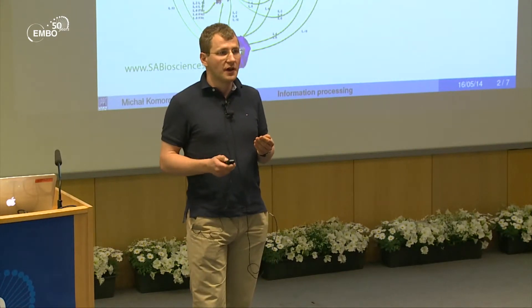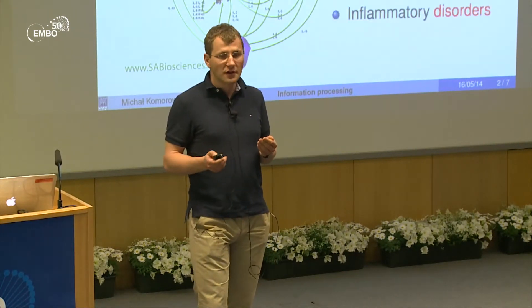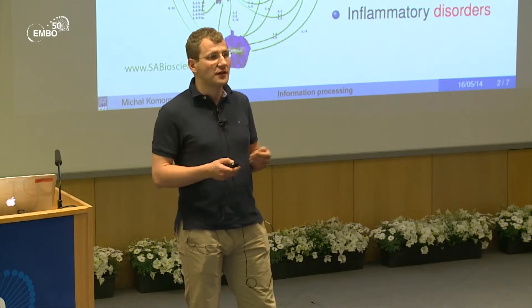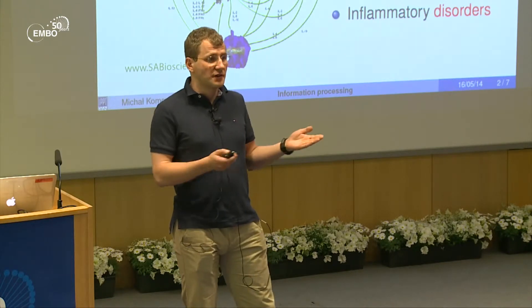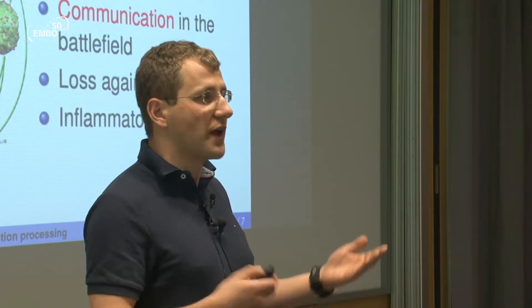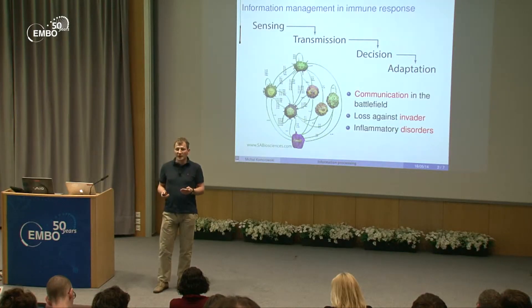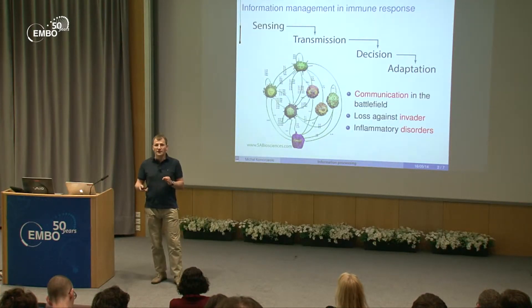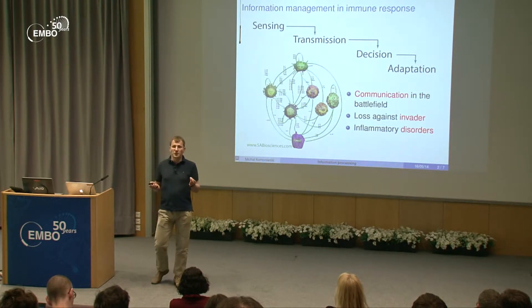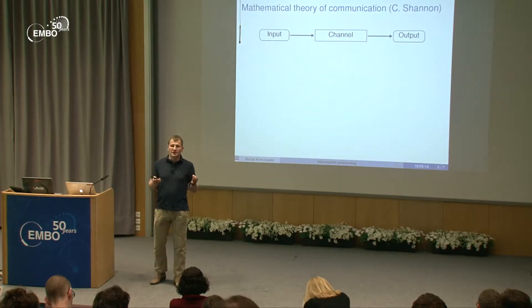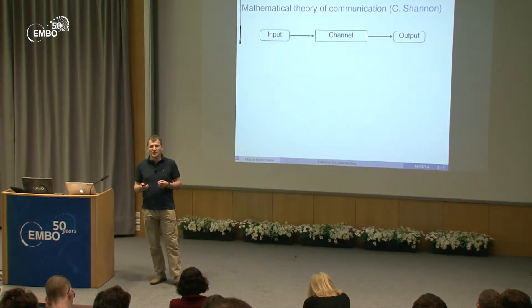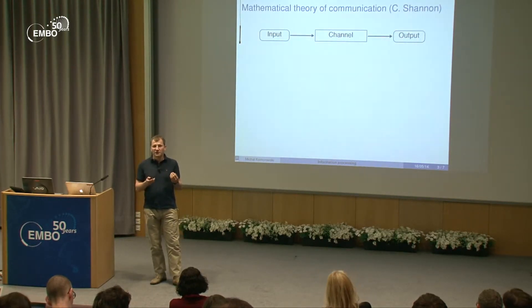In some subsystems, however, the functioning of this mechanism is crucial for survival. One example is the immune system. If things go wrong in this communication pattern, either the battle against an invader is lost, or we have inflammation, which can be equally harmful. Therefore, cytokine communication in the battlefield seems to be crucial.